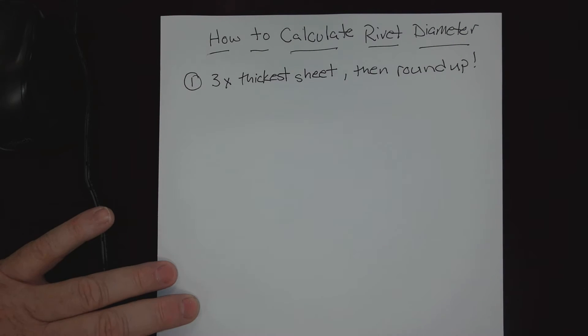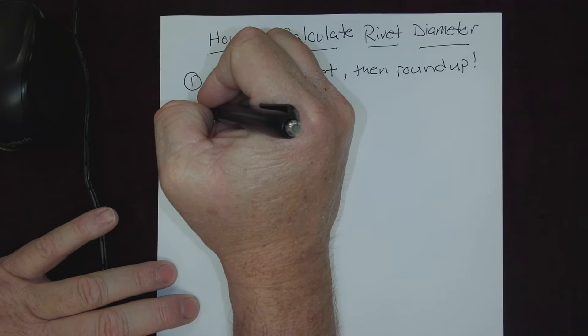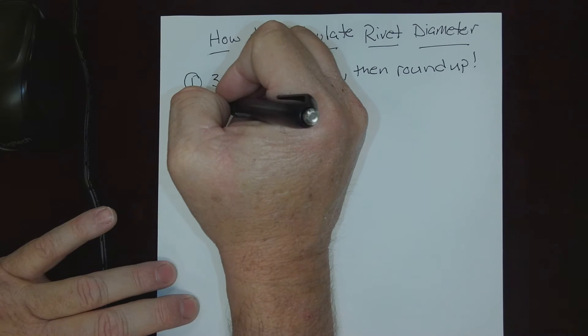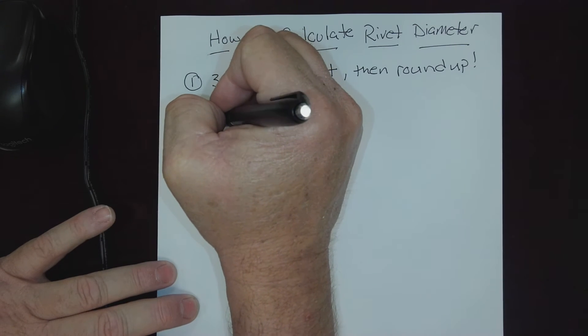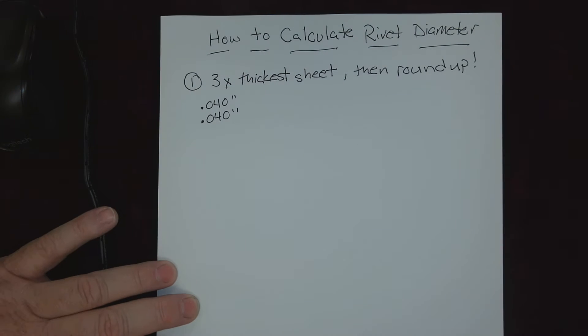Let's look at a stack-up together and we'll do the math. We'll go completely through one of these so that you can practice them and become really comfortable. With practice and time, you may not even have to do these formulas - you'll develop a memory for what works with what. So let's say we're going to join two forty-thousandths of an inch sheets of metal together. That's common in our lab and shop.